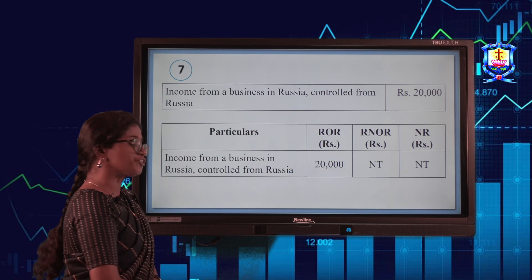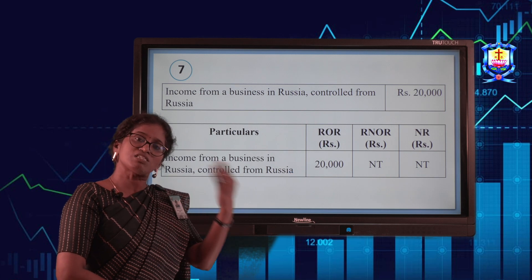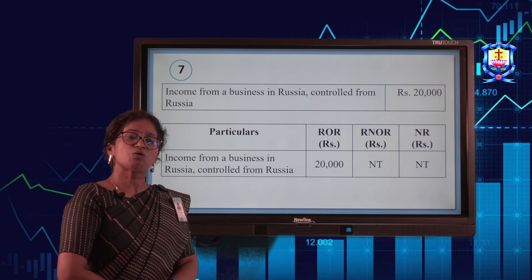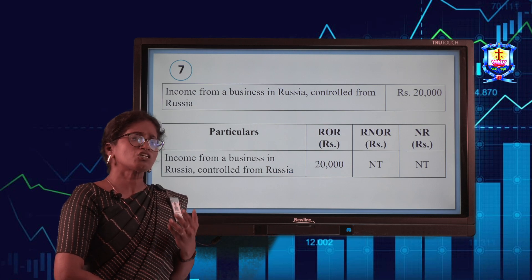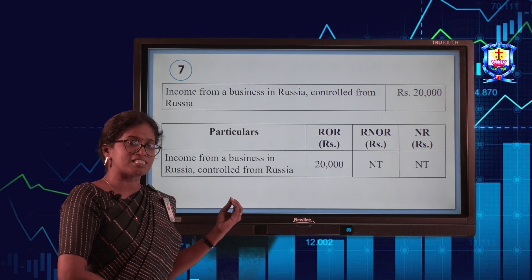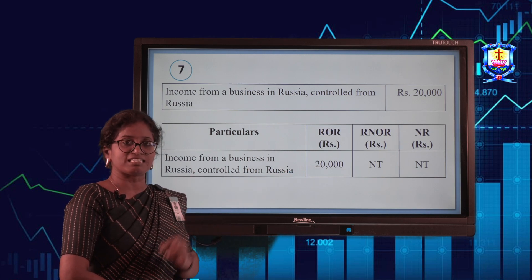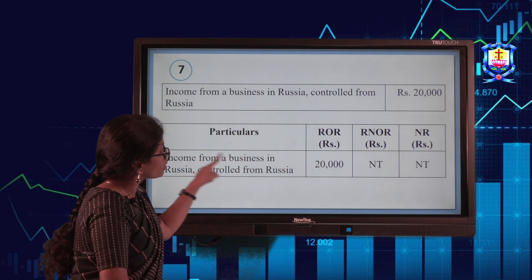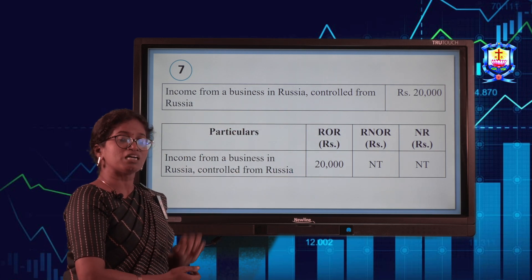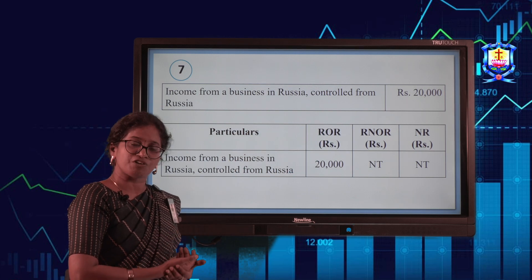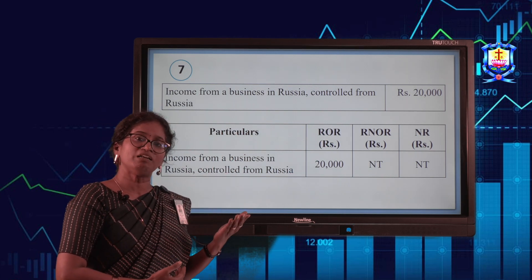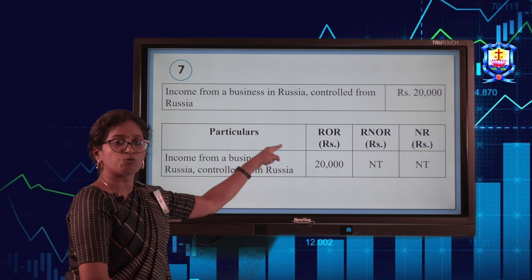Income from business in Russia, controlled from Russia. The source is outside India and the receipt is also from outside India, so it is foreign income. This is taxable only for ROR — not for RNOR, because the business is not controlled from India; it is controlled from Russia. Don't confuse with the word 'business control' — you need to check the country as well. So this income is taxable only in the first category, ROR.